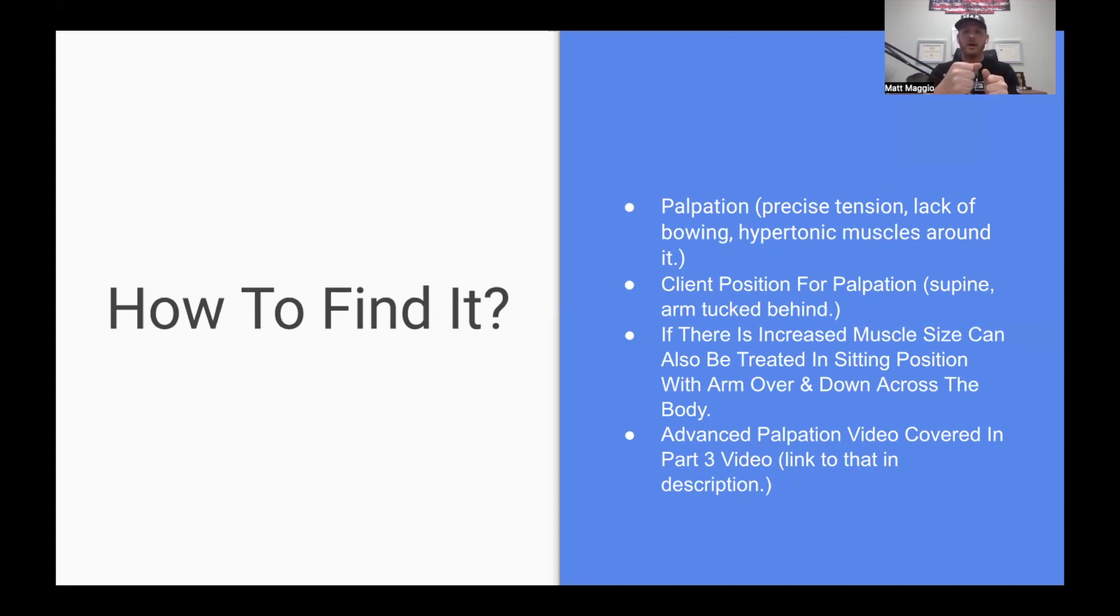And when a nerve's healthy, it should have a little bit of a wiggle and a bow to it. And a lot of times when it's not, you hit it, it's really tender and sensitive to the client. They're like, ooh, that doesn't feel right. And usually what you'll find is all the muscles around there will be very hypertonic.